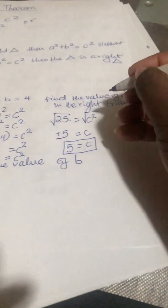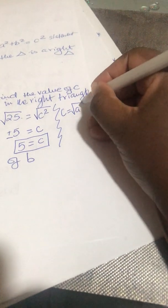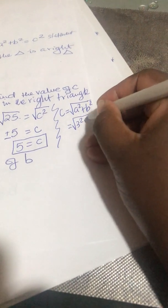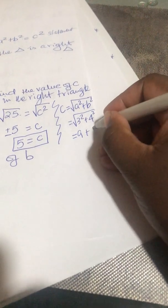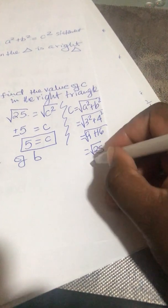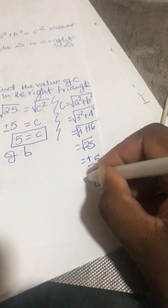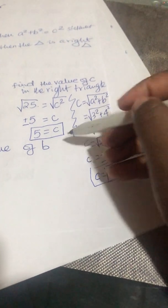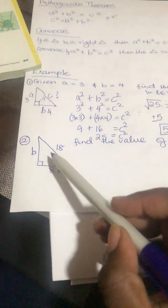We can also do this another way: c equals the square root of a squared plus b squared. So c equals the square root of 3 squared plus 4 squared, which is the square root of 9 plus 16, which is the square root of 25, equals plus or minus 5. Since it is a distance, I only need the positive, so c equals 5. You can do it either way.